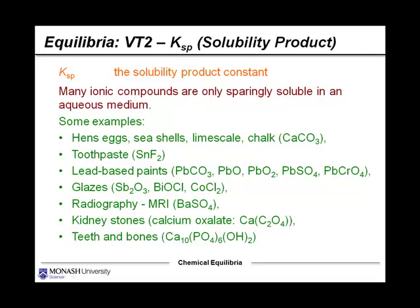Lots of ionic compounds are actually only sparingly soluble in an aqueous medium, and there's a long list of examples there. You can see the kinds of metals and anions we're talking about in these systems. Lead, obviously a big one there, most lead inorganic species are very insoluble in water.